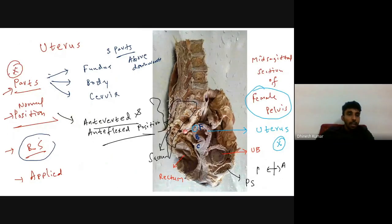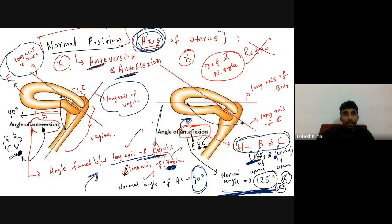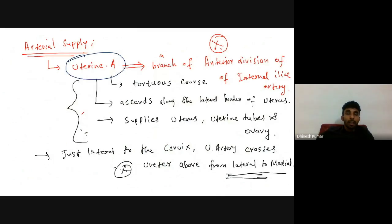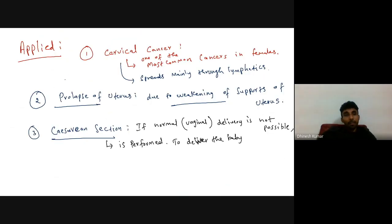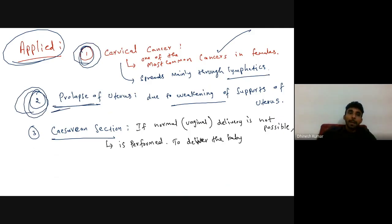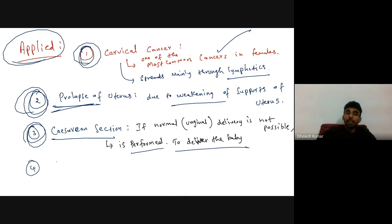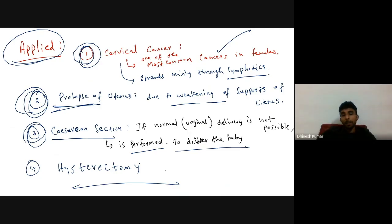For spotting purposes, remember the uterus is supplied mainly by the uterine artery, which is a branch of the anterior division of the internal iliac artery. The applied aspects of the uterus: cervical cancer is one of the most common cancers in females and mainly spreads through lymphatics. Other applied aspects include prolapse of uterus (due to weakening of supports), cesarean section (when normal vaginal delivery is not possible), and hysterectomy — the surgical removal of the uterus.